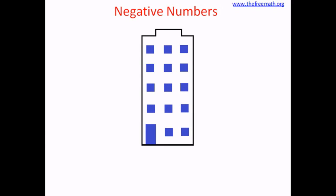Before we see what negative numbers are, let's look at this building. The floor where we enter the building, which is on the ground, is called the ground floor. Let's call that floor number zero — because to enter this floor you don't climb any stairs. When you go up one staircase, you reach the first floor, which is floor number one.